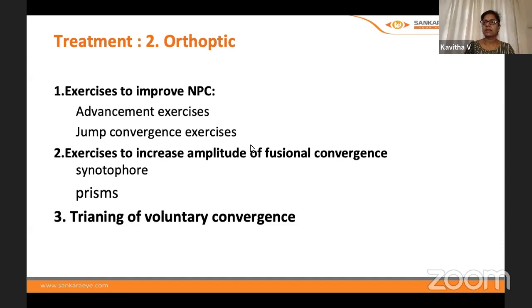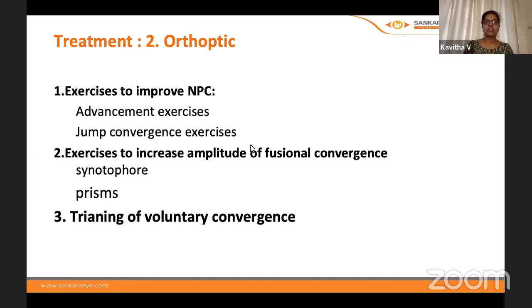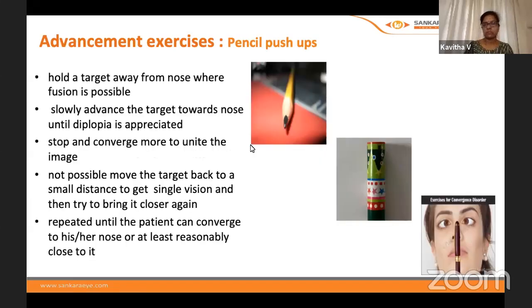For orthoptic treatment, there are three headings: first, exercises to improve the near point of convergence; second, exercises to increase the amplitude of fusional convergence using synoptophore and prisms; and third, training voluntary convergence. Specific exercises address each of these goals.